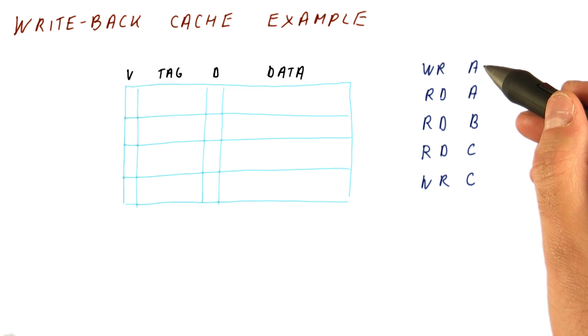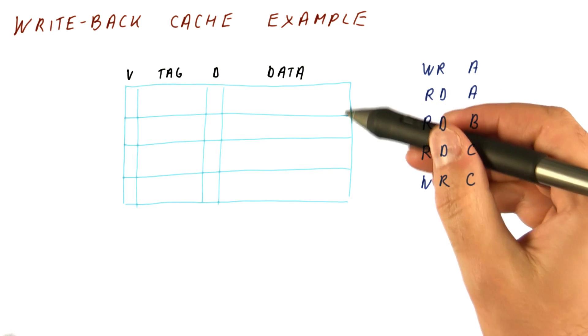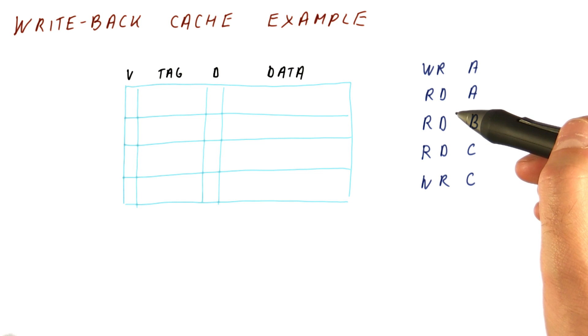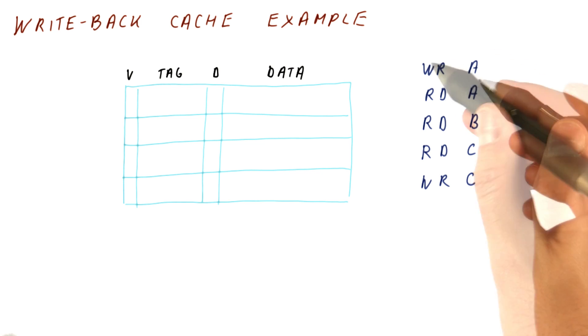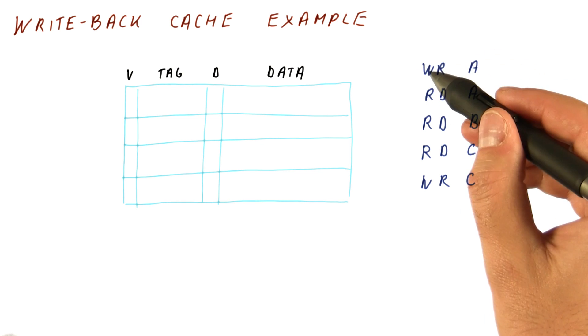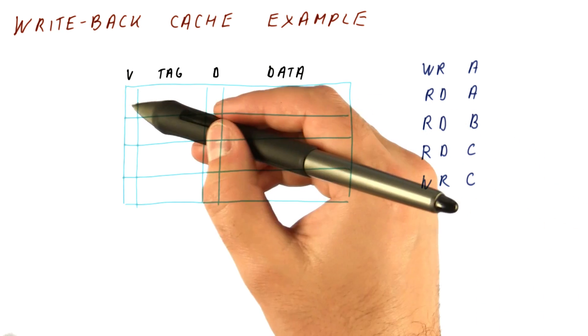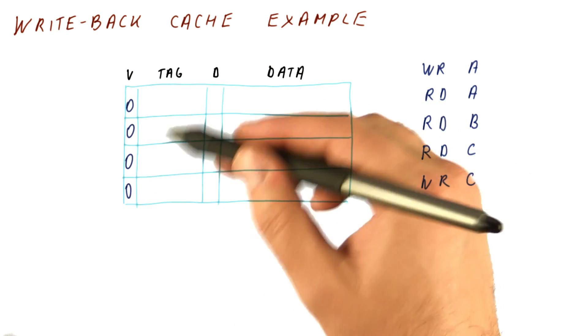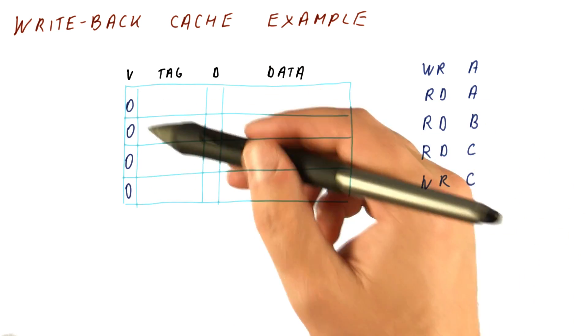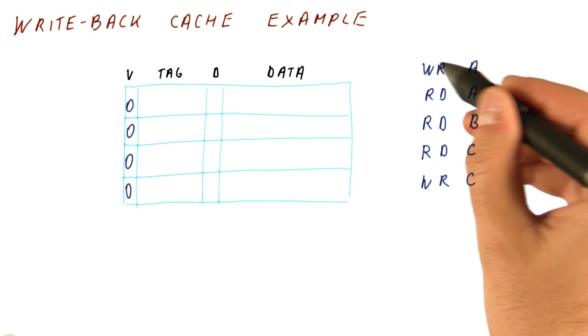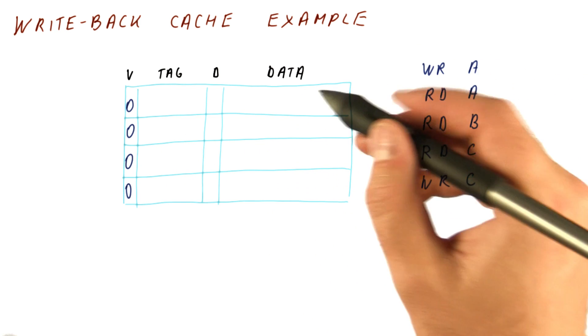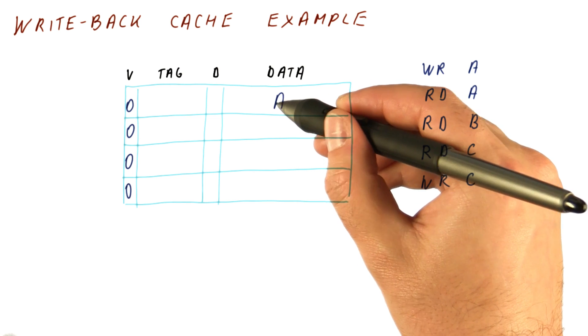Let's say that the processor is doing this sequence of accesses and A, B, and C mapped to different sets in the cache. The first access is write A, so what we do is we have a miss. All of our valid bits are 0, so it doesn't matter what the rest of the cache has because none of the lines are valid. When we have the first write to A, we will bring A here.